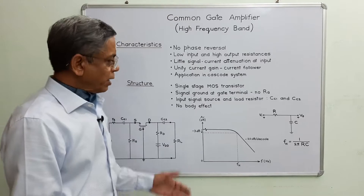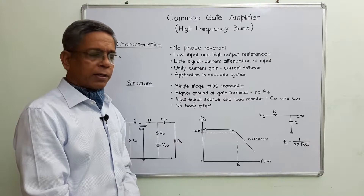The first order low pass network can be represented by a simple circuit containing R and C, and we can write the expression for upper 3dB frequency as FH = 1 / (2π RC). Let us now look at the high frequency small signal equivalent circuit for common gate amplifier.